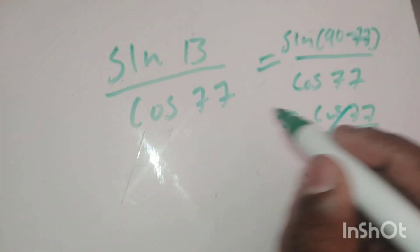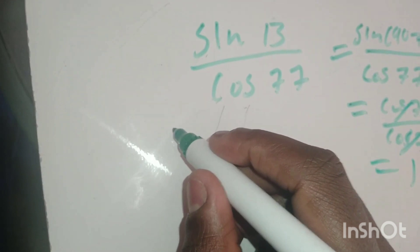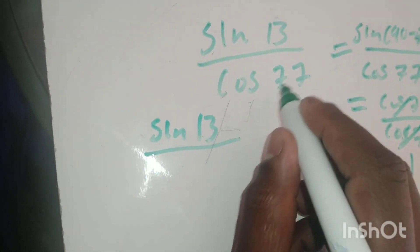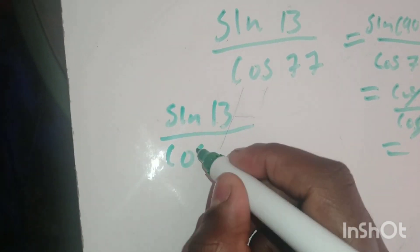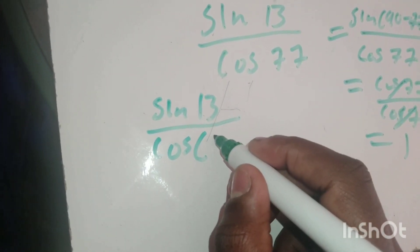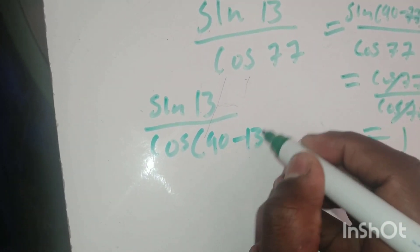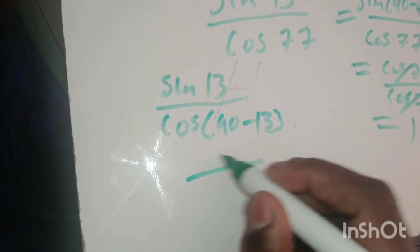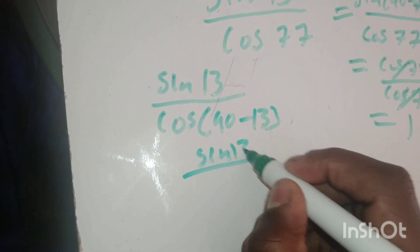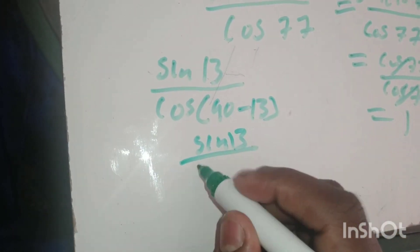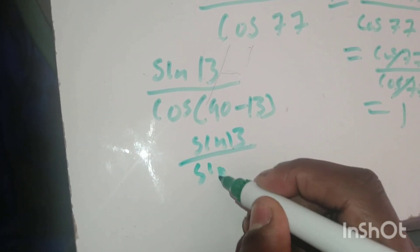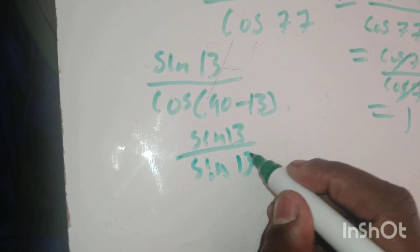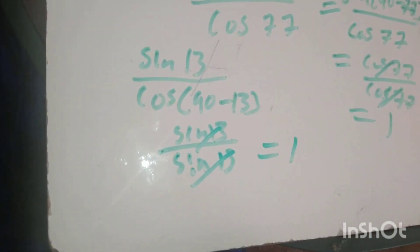Now let me change the bottom instead. We have sin(13) over cos(77). Cos(77) is the same as cos(90 minus 13). Since cos(90 minus theta) is sin(theta), cos(90 minus 13) becomes sin(13). We get sin(13) over sin(13), which cancels and gives you 1.